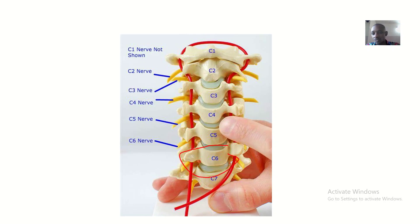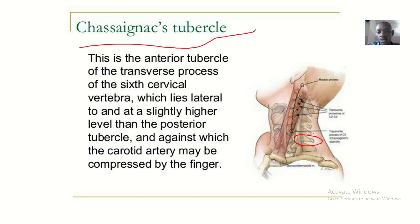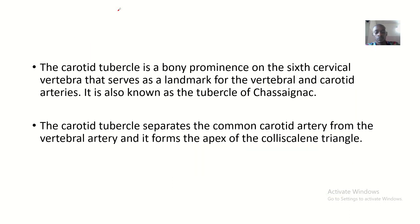This is the front side of C6, but at the back, C6 has a tubercle called the tubercle of Chassignac. C6 is somehow unique in this way, and that is why it is called the Chassignac tubercle or the carotid tubercle. The carotid tubercle is a bony prominence on the sixth cervical vertebra.